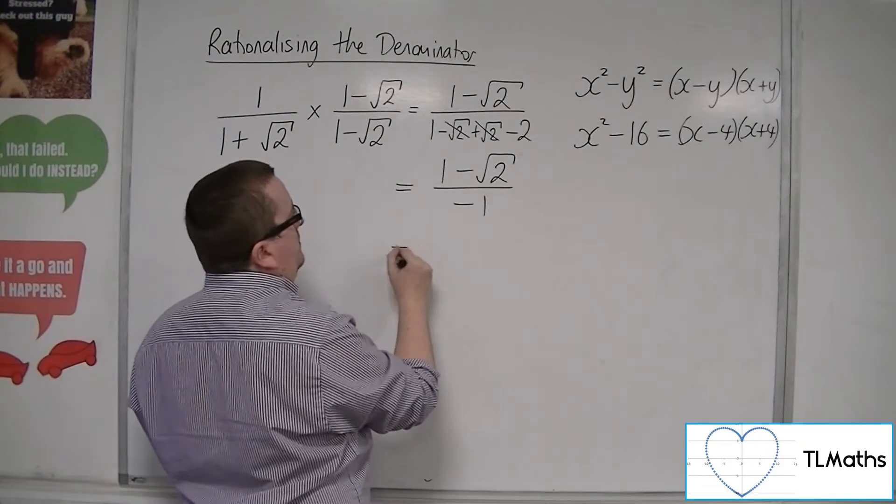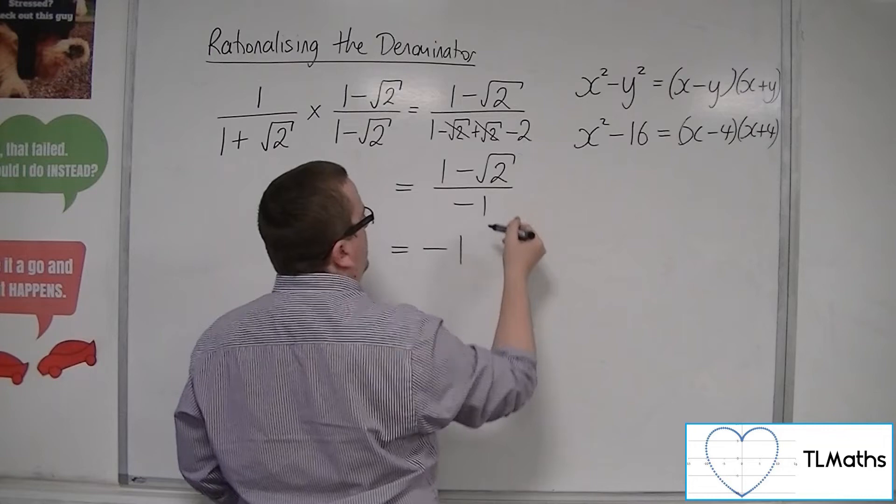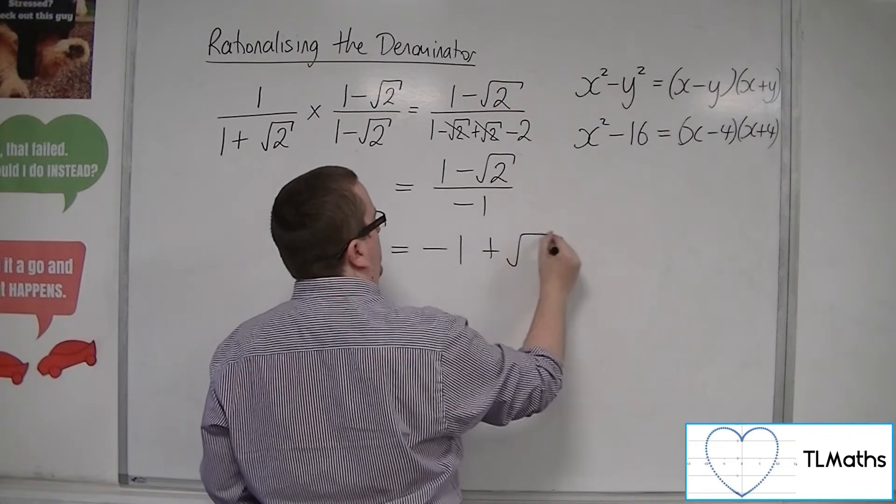Now we probably don't want to leave it like that. So 1 divided by minus 1 is minus 1. Minus root 2 divided by minus 1 is plus root 2.